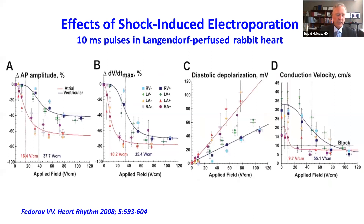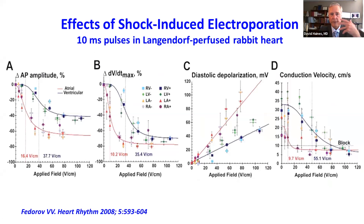We've known about shock-induced electroporation and injury for a long time. The experiment demonstrated here shows the effects of a 10 millisecond pulse — a relatively long pulse compared to what we use in pulsed field ablation — on action potential amplitude, dV/dt, diastolic depolarization, and conduction velocity. It is by creation of these pores that causes depolarization of the cell, breakdown of the cell, and ultimately can proceed on to cell death.